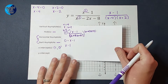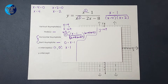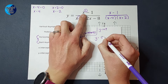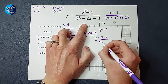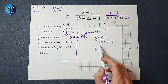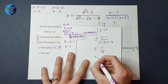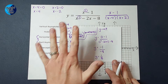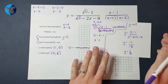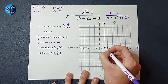Next I'm going to find my y-intercept by setting x equal to zero. So I have y equals zero minus 1 over zero squared minus 2 times zero minus 8. On top I'm left with negative 1. Zero squared is zero, negative 2 times zero is zero, minus 8, so the bottom is negative 8. A negative divided by a negative is a positive, so y equals one eighth. So my y-intercept is at (0, one eighth) — just a little above zero on my graph.